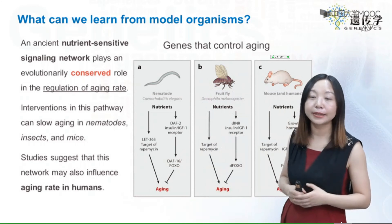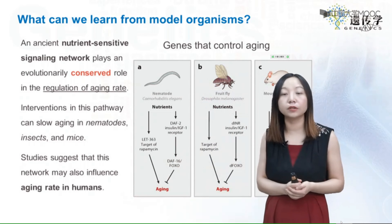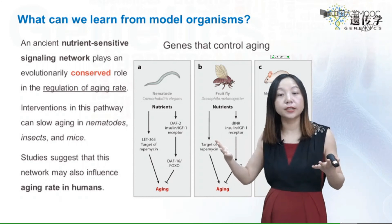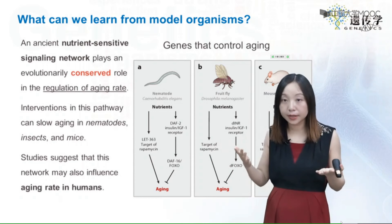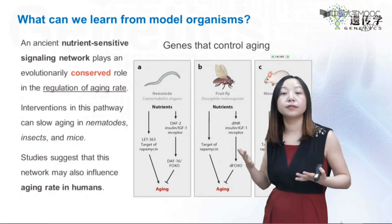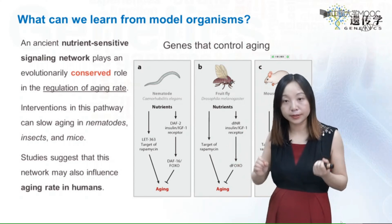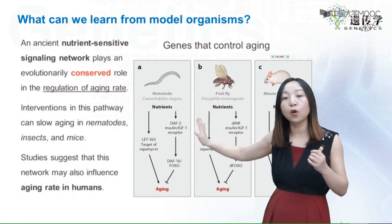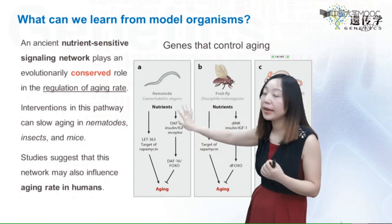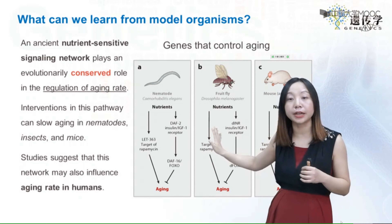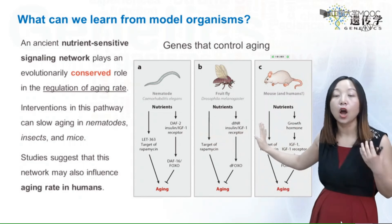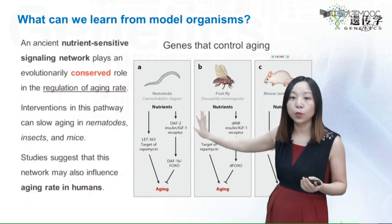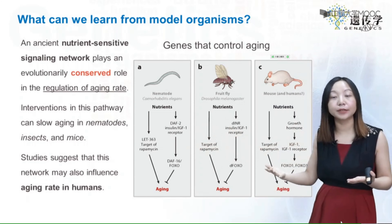If we want to study aging in humans, it's very difficult because a human generation is 60 to 100 years, making it hard to follow multiple generations. However, for worms and fruit flies, since their generation time is only weeks, we can follow them generation after generation, making them ideal models to study aging. Since the relevant genes are conserved — homologous genes are found in worms, flies, and mammals — knowledge from these simple organisms can be readily applied to human studies.